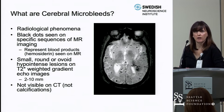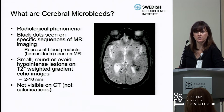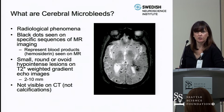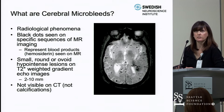They should be round or ovoid, and the size should be between 2 to 10 millimeters. An exact cutoff hasn't been decided upon — most are about 5 millimeters. They should not be visible on head CT; these are not calcifications.